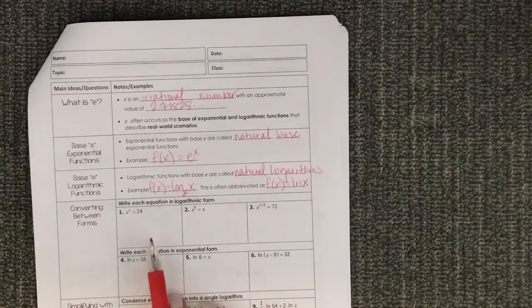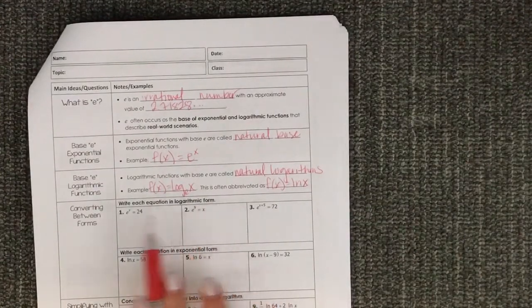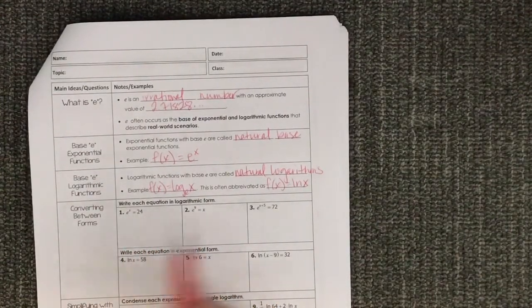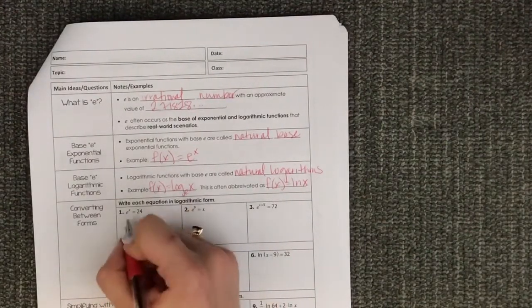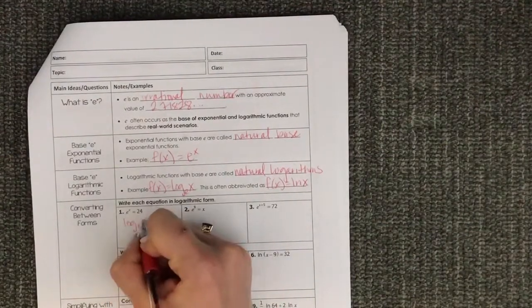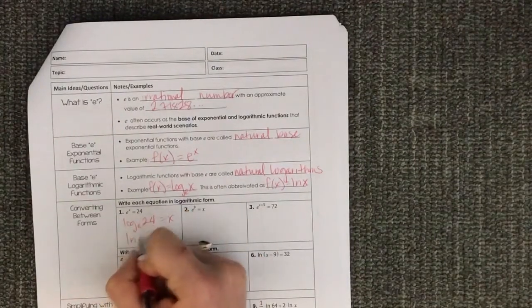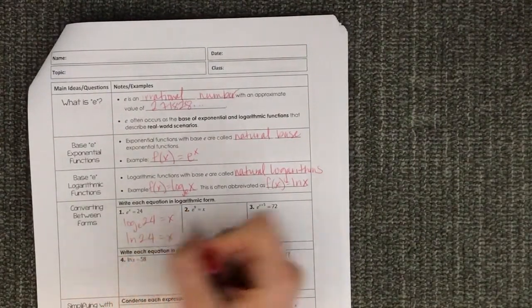So when we're writing an equation in logarithmic form and it has a base of E, the rules are not any different. So this is log base E of 24 equals x, but I want you to write that as LN 24 equals x.